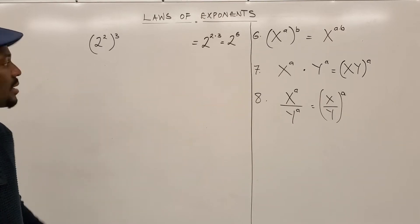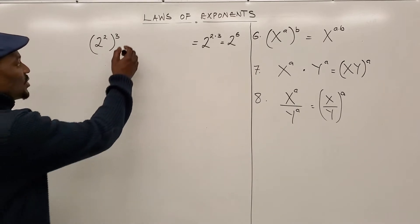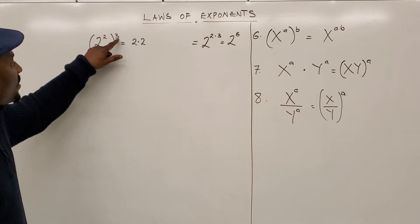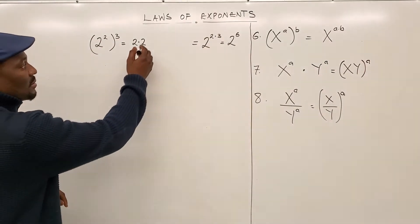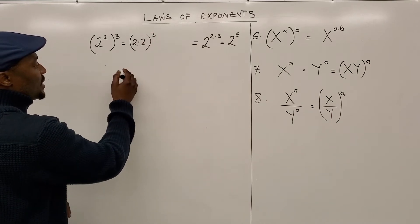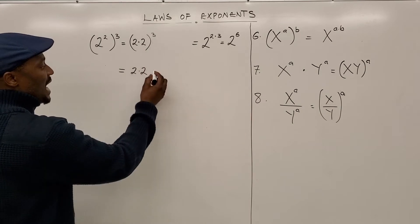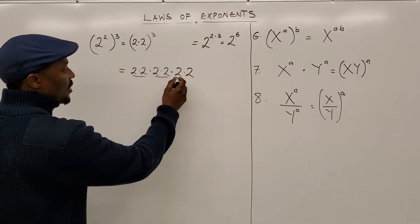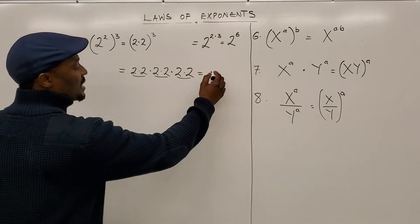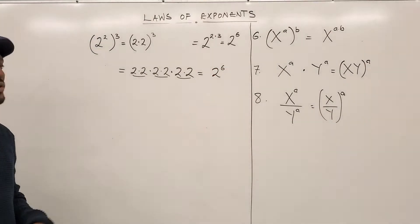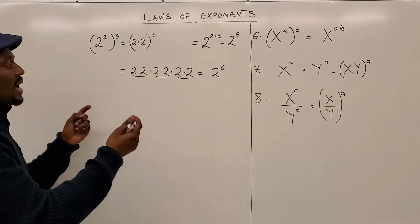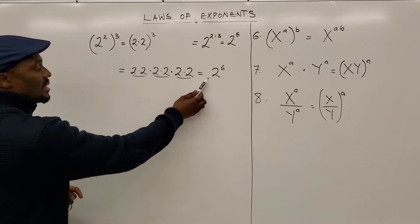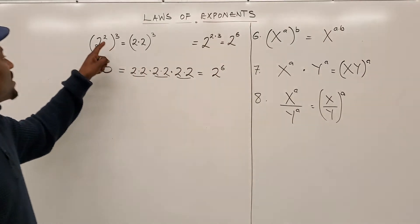Let's test and see if that's right. 2 to the power of 2 is essentially 2 times 2, but we're supposed to do this three times. So it's (2 times 2) to the third power, which written out is: 2×2, then 2×2 again, then 2×2 one more time. At the end of the day you have 2 in six places — the same as 2 to the 6th — which you could have gotten by simply multiplying 2 by 3.